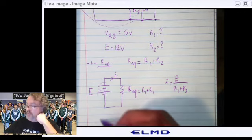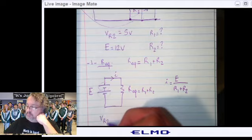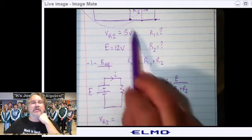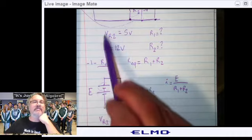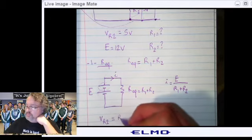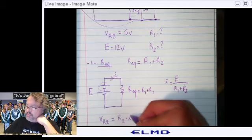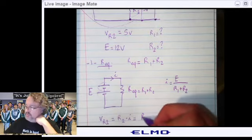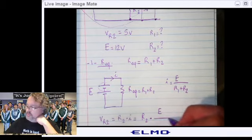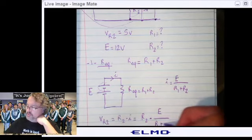Which means that VR2, which is what we are going to design everything around, it's going to be equal to R2 times I, which is going to be R2 times E over R1 plus R2.